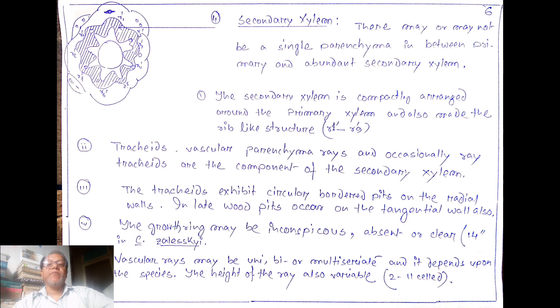The point is secondary xylem. There may or may not be a single parenchyma layer in between primary and abundant secondary xylem. The secondary xylem is compactly arranged around the primary xylem and also made the reave-like structures. Here the reave-like structures are marked as r prime 1 to r prime 9.